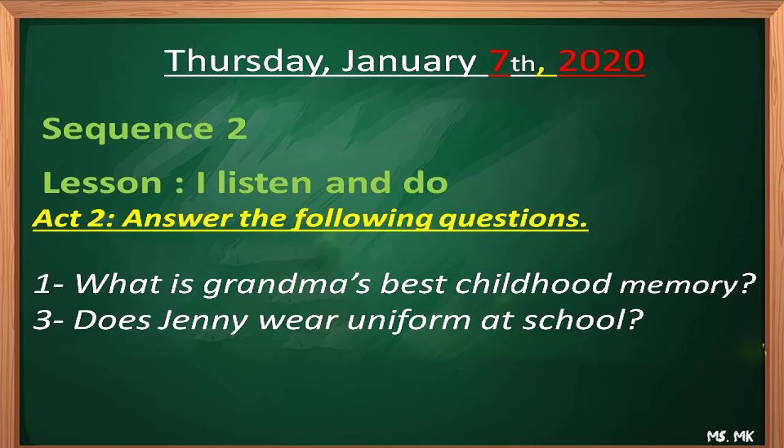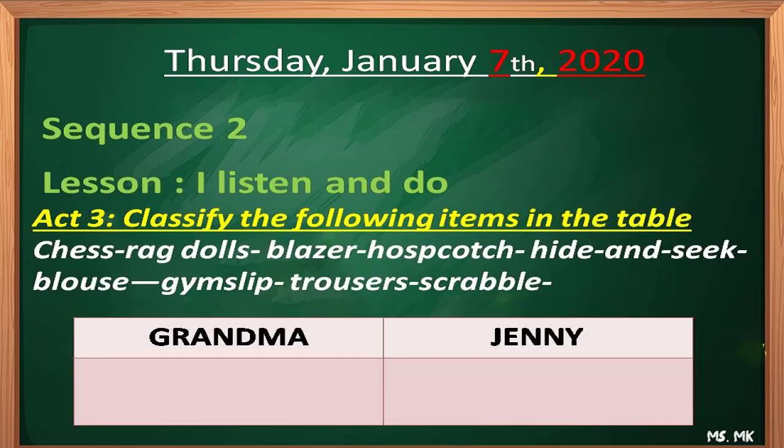The second activity is answering questions. You have to present a WH question and a yes/no question. My first question is: 'What is grandma's best childhood memory?' — try to make them speak before they write. The second question is a yes/no question: 'Does Ginny wear a uniform at school?' You're free to add details like 'What did she used to wear?' but I prefer not to add this question, because my next activity is a classification.